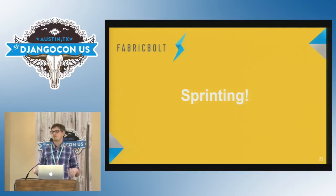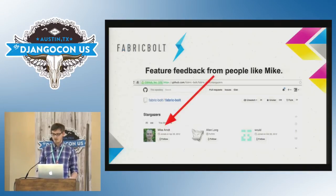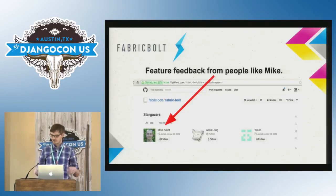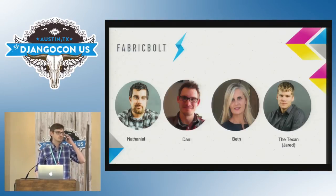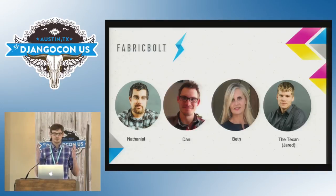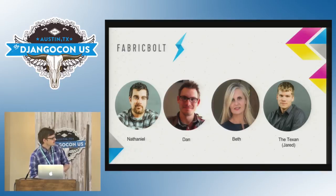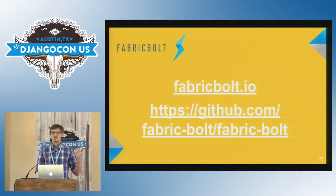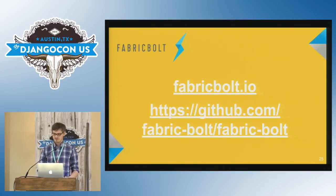I wanted to invite people to help us on the sprints. We've been taking feedback — last night at the party we ran into Mike and got great feature ideas. Come help us. Our core developers maintaining the project are here — Nathaniel, myself, and Jared the Texan, and everything really is bigger in Texas. Thursday and Friday we're sprinting. You can check us out at fabricbolt.io and on GitHub — MIT license, pull it down, test it out, try it.